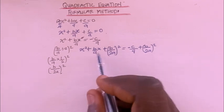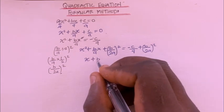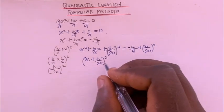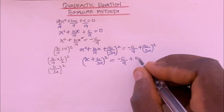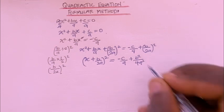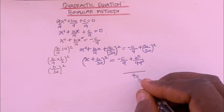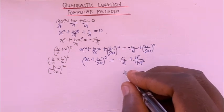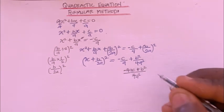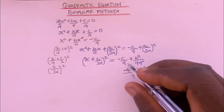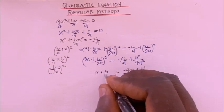Looking at the left side, this is a perfect square, so I can write it as (x + b/2a)². On the right side, I simplify: -c/a plus b²/4a². Taking the common denominator 4a², that gives (-4ac + b²) / 4a², so the equation becomes (x + b/2a)² = (b² - 4ac) / 4a².